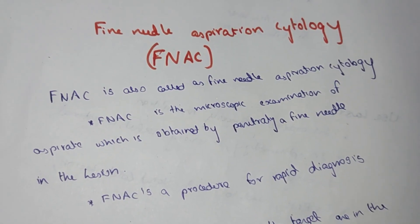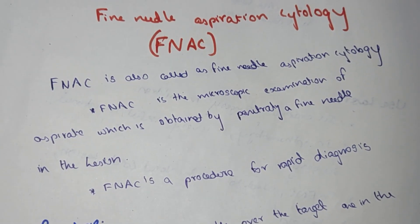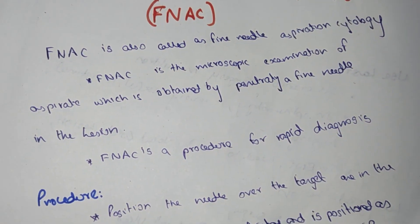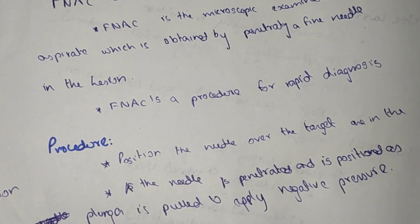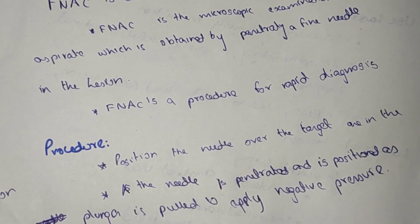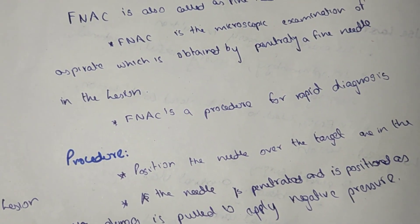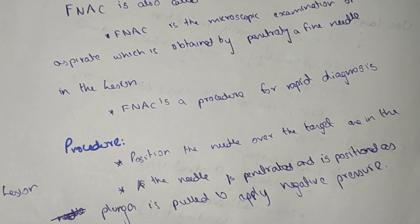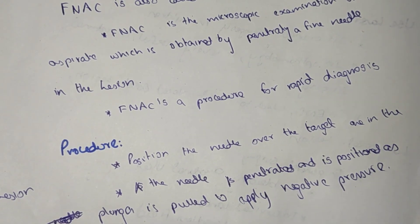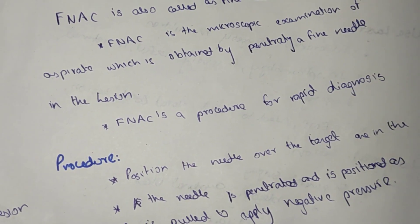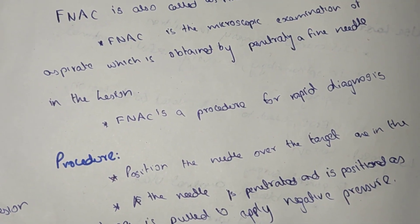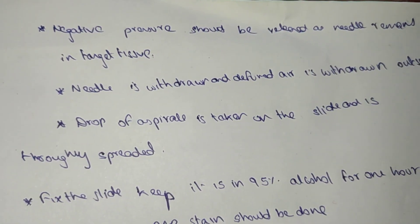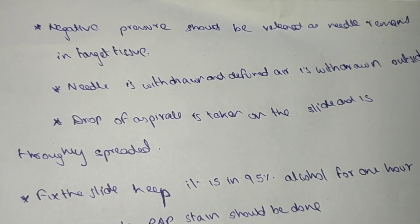FNAC is a procedure of rapid diagnosis. The procedure involves positioning the needle over the target area in the lesion. The needle is penetrated and positioned, then pulled to apply negative pressure. Negative pressure should be released as the needle remains in the target tissue.